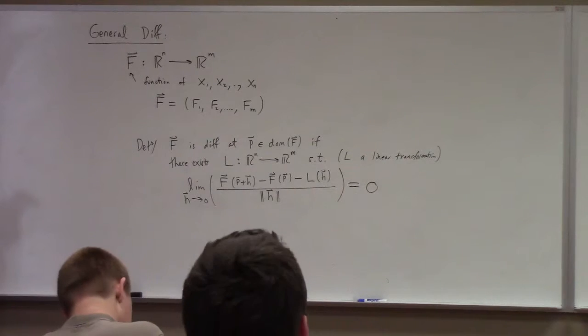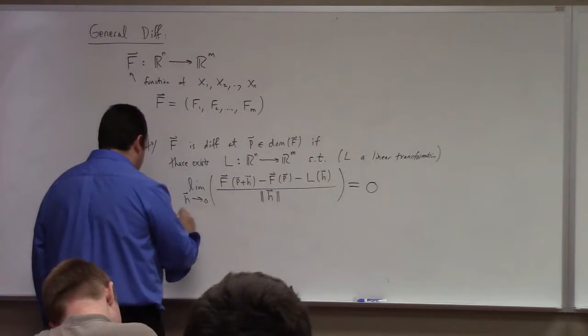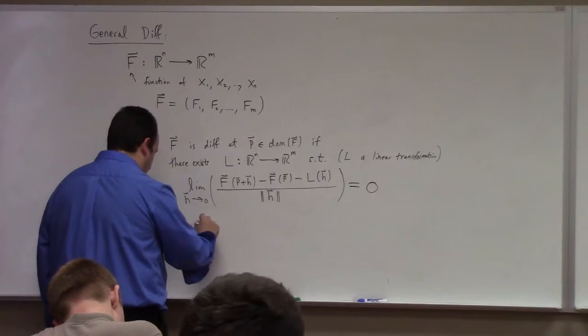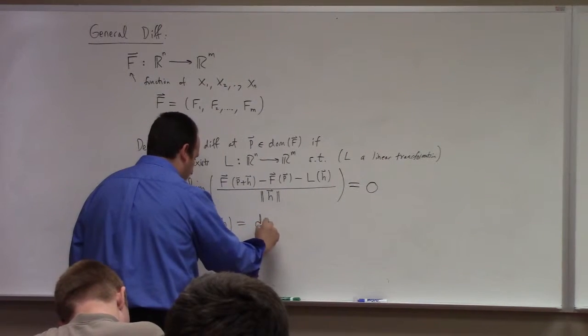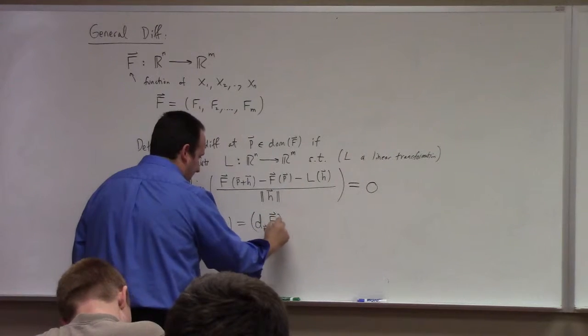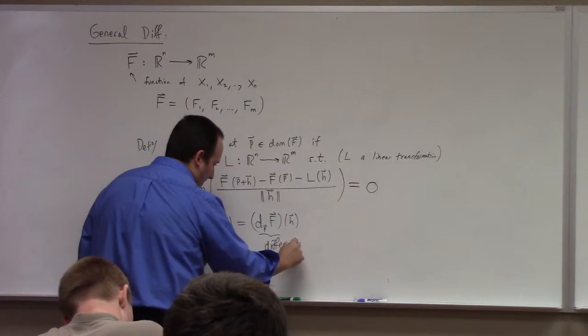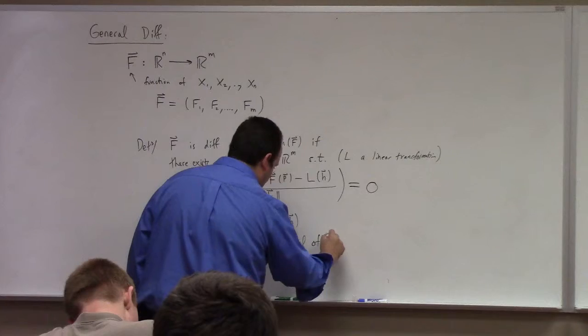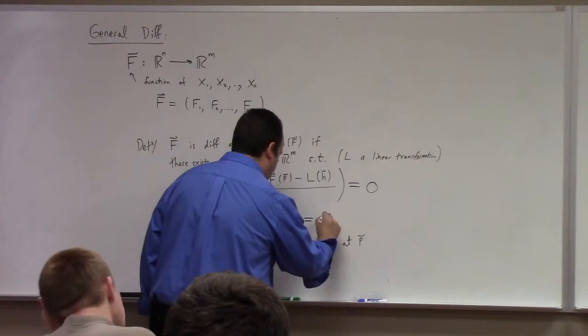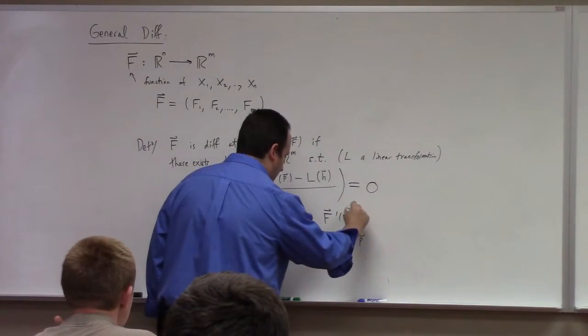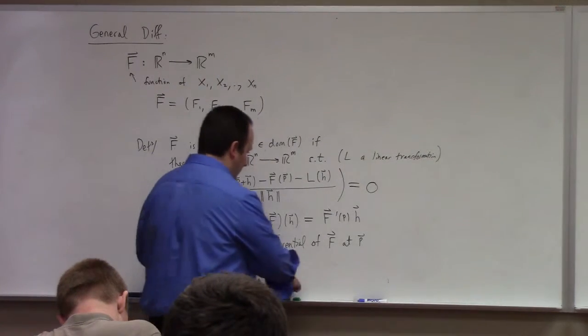This is called the Frechet quotient. And this is what's known as Frechet differentiability. In this case, if this exists, then we write L of h is equal to d sub p f acting on h. So this is the so-called differential of f at p acting on h. And you can also write this as f prime of p times h.